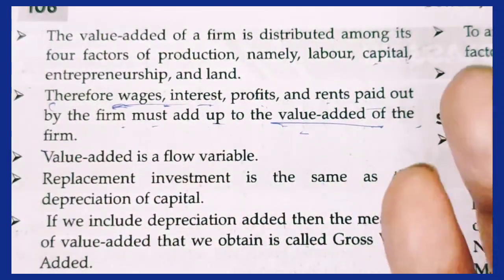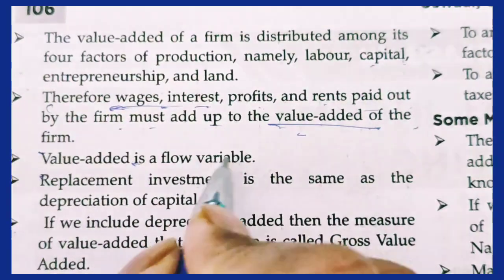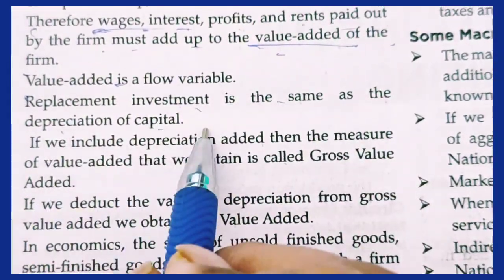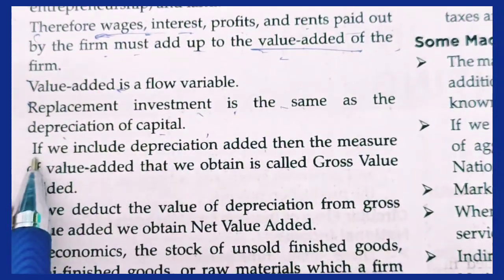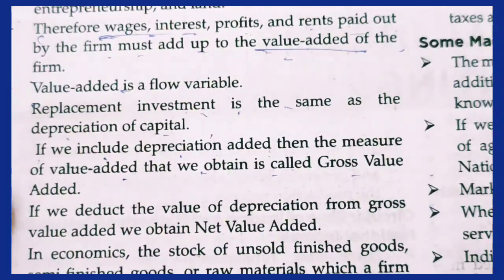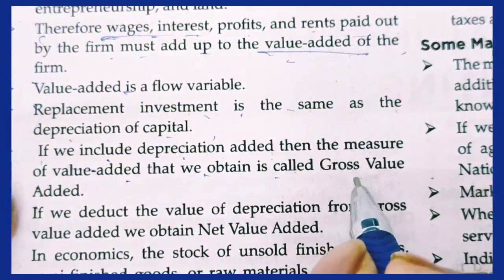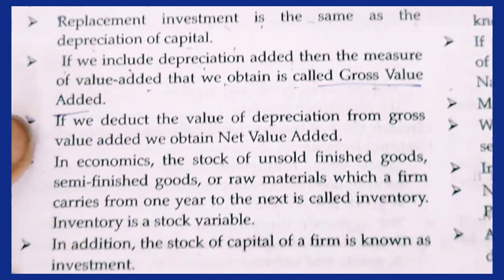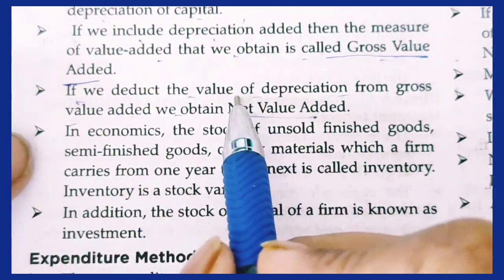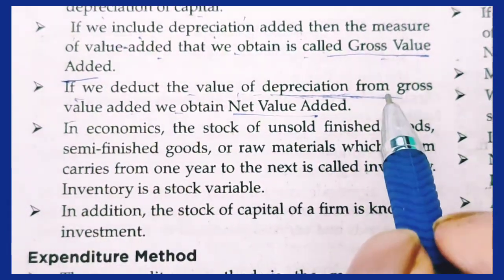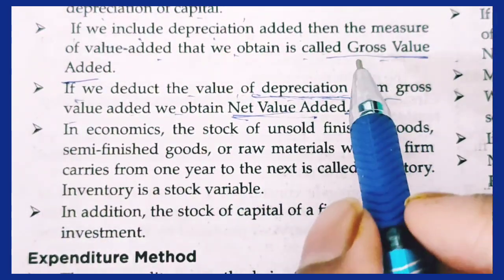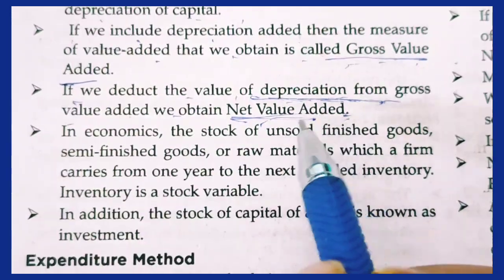Value added is a flow variable. If we include depreciation in value added, the measure we obtain is called gross value added. If we deduct the value of depreciation from gross value added, we obtain net value added. So: gross value added = value added including depreciation; net value added = gross value added minus depreciation.